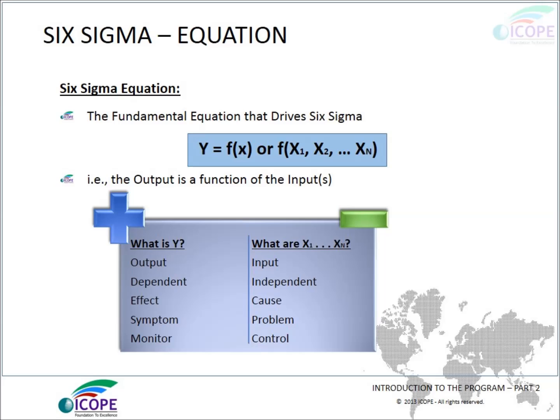The basic Six Sigma equation can be formulated as Y = f(X), or Y is a function of X, where X1, X2, X3 through Xn are the inputs and Y is the output. This can also be represented as: output is a function of inputs.